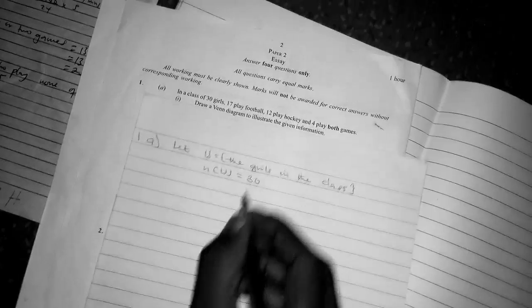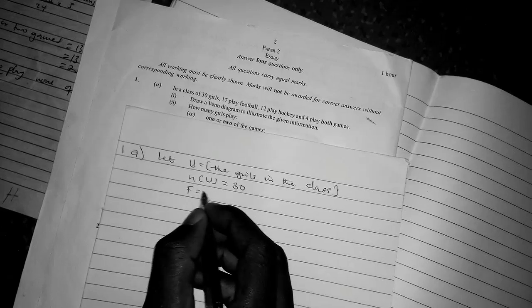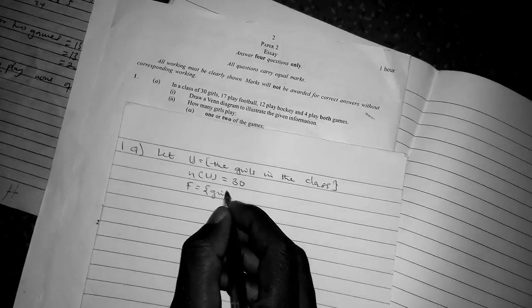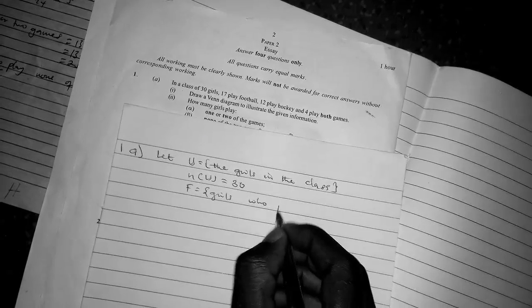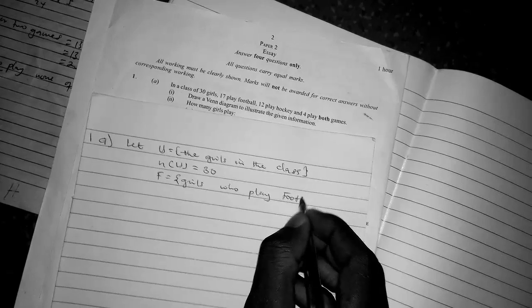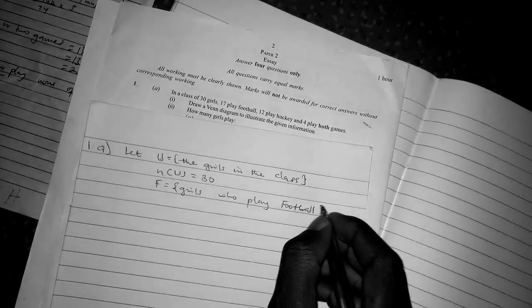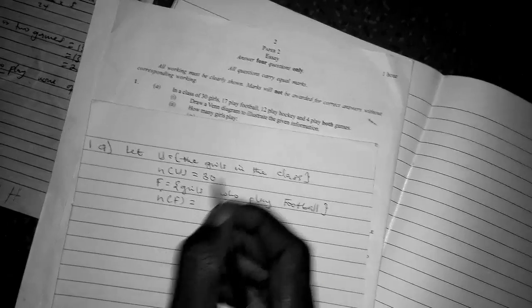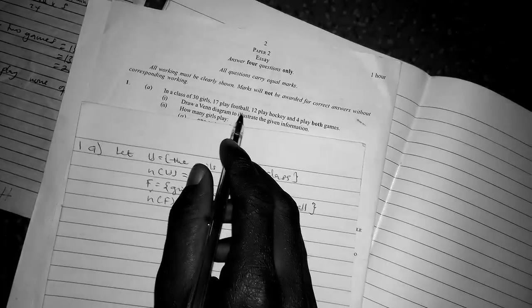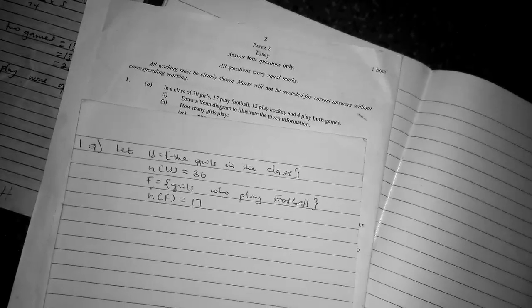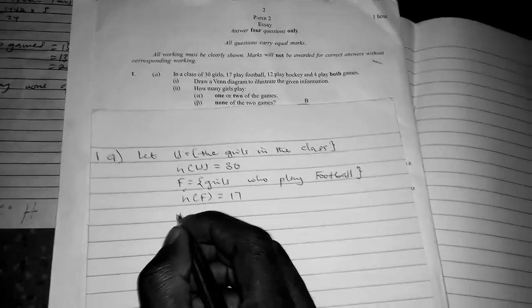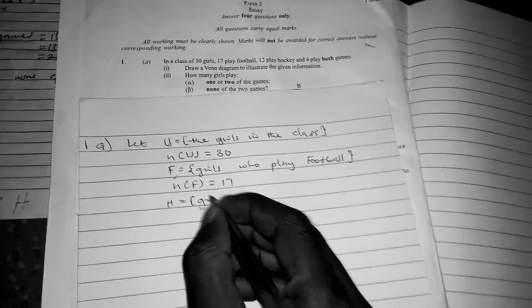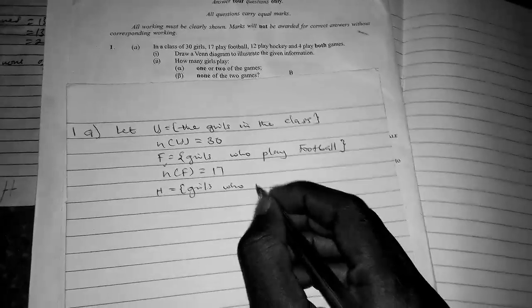Let U be the universal set, the girls in the class. So n(U) = 30 since there's a class of 30 girls. Also, we have F = the girls who play football, so n(F) = 17.